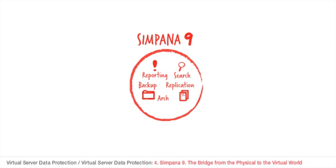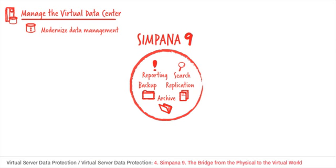With Sympana 9, you can completely modernize data management and protection operations for virtual server environments. It extends the initial protection of virtual machines by leveraging the power of the unified Sympana 9 platform to extract the most value out of your data. Sympana 9 integrates into the virtual environment and will automatically detect and protect all VMs in the environment. Protection policies are applied based on user-defined rules to ensure no VM goes unprotected.